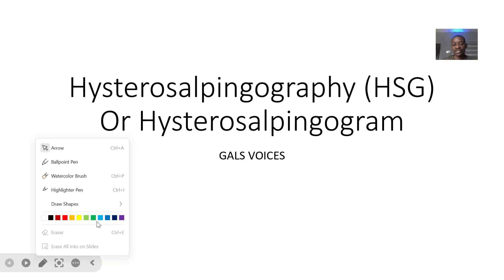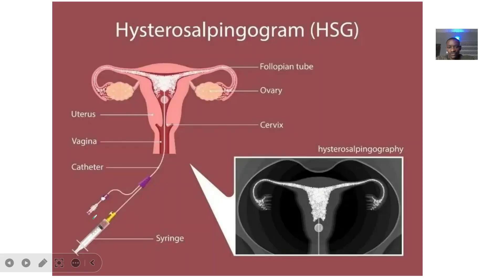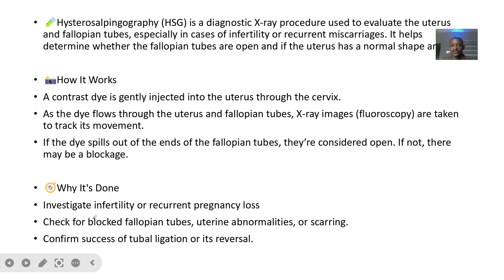The next type of imaging we should be looking at is known as hysterosalpingography, or hysterosalpingogram. You can see the uterus, the fallopian tubes, and the ovaries being viewed on this image. It is a diagnostic X-ray procedure used to evaluate the uterus and the fallopian tubes.